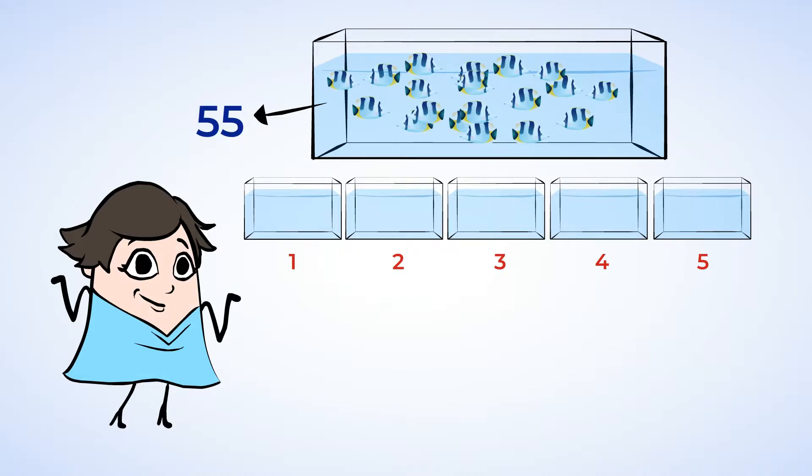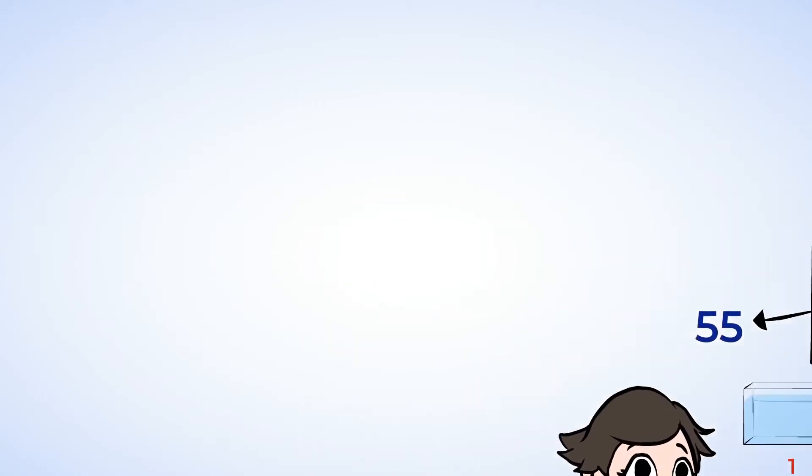The problem that we can start with is division: 55 divided by 5. We can think about this as multiplication too. What times 5 is 55? 11. Each of the tanks will have 11 fish. They look more comfortable now.